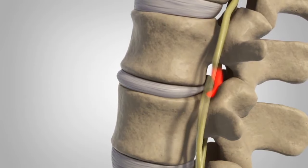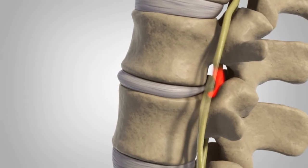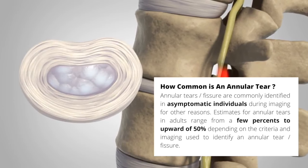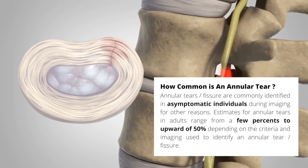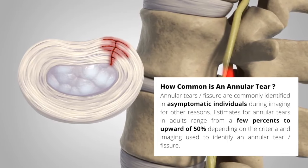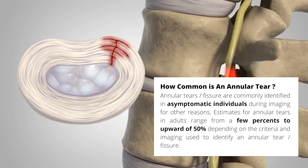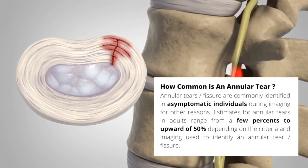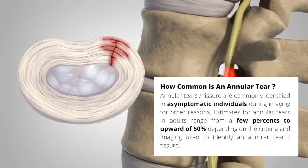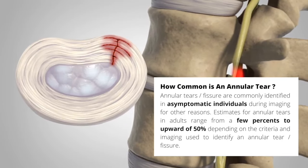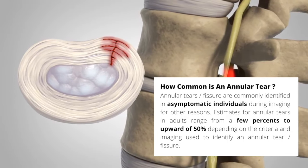But how common is an annular tear? Studies have shown that annular tears or fissures are commonly identified in asymptomatic individuals during imaging for other reasons. Estimates for annular tear in adults range from a few percent to up to 50 percent, depending on the criteria and imaging used. That means out of two people, one of them has a high chance of having an annular tear and being asymptomatic, which means they would not have any pain or symptoms.